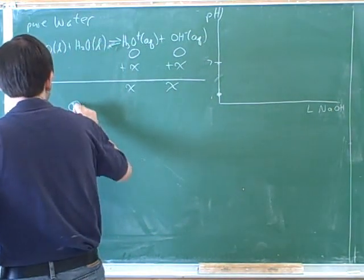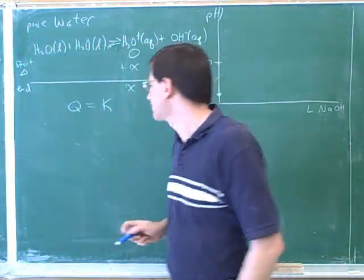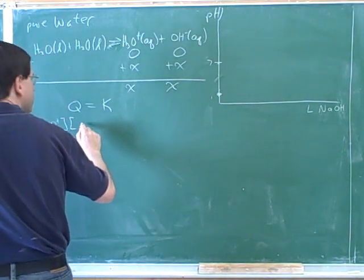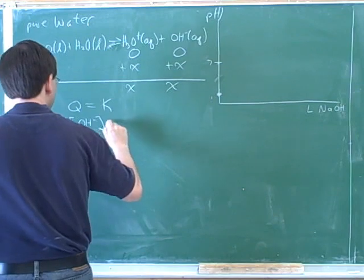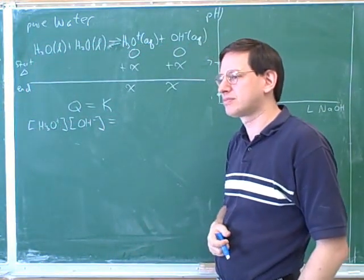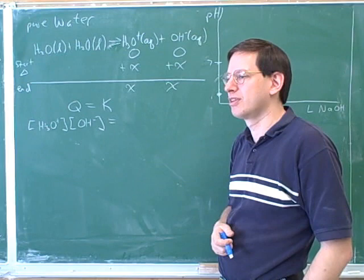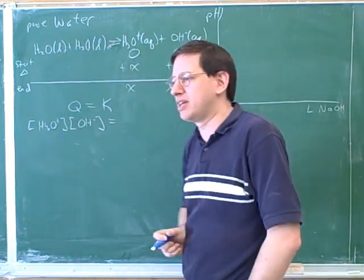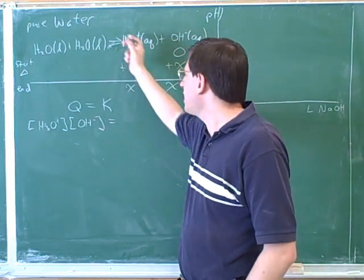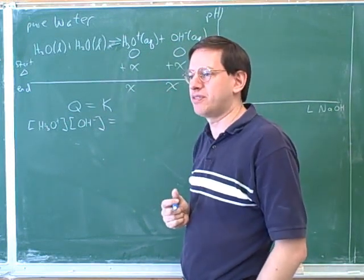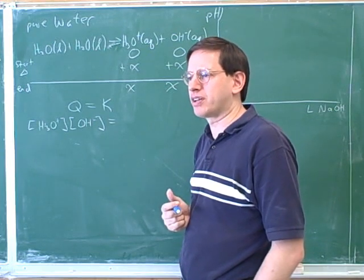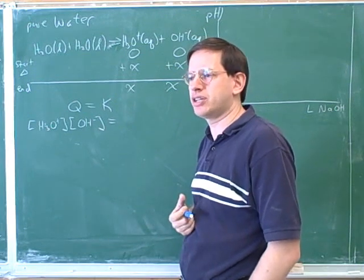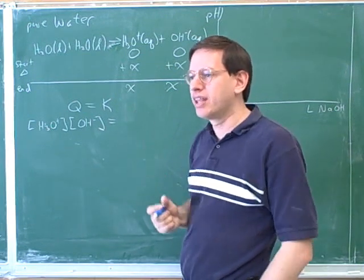Now we know that in equilibrium, Q equals K. The equilibrium constant for this reaction is the hydronium times the hydroxide concentration. Water doesn't appear because it's a pure liquid, so those don't appear in the reaction quotient. Now there's a special name for the equilibrium constant for this reaction. Do you guys know what the name or the symbol is for the K for water autoionization? KW. That's right, that's the KW.